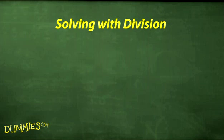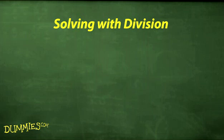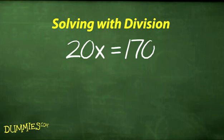One of the most basic methods for solving equations is to divide each side by the same number. Many formulas and equations include a coefficient or multiplier with the variable. To get rid of the multiplier and solve the equation, you divide.